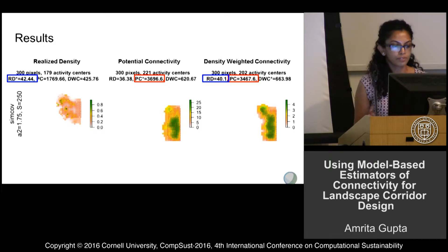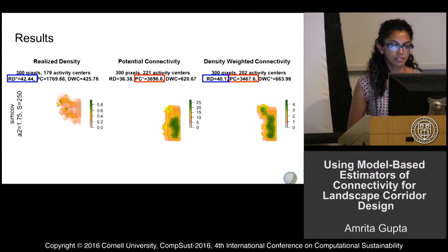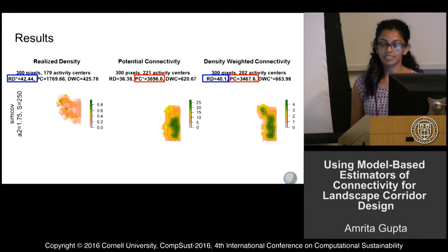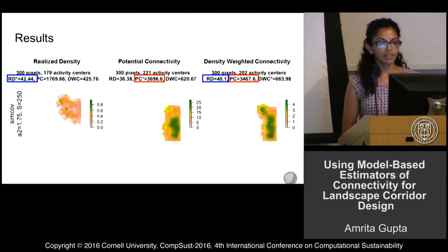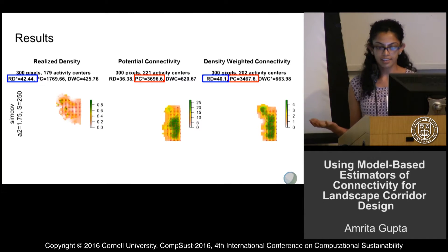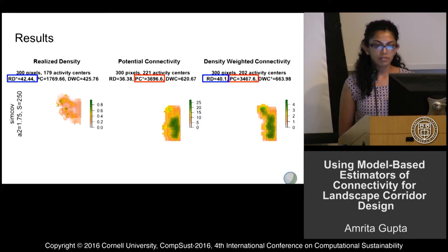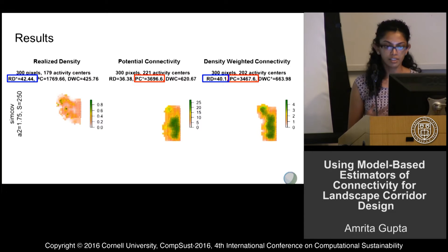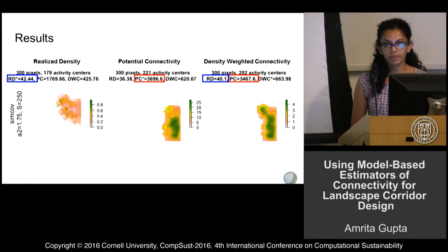I'd like to highlight one interesting result. The first result, on the left-hand side, is the optimization of just realized density — the number of individuals we're protecting — and we get about 42 individuals. We're working with a dataset based on black bears. In the potential connectivity case, we see a rather different looking landscape. In the density-weighted connectivity case, we get a similar number of individuals compared to realized density and also a similar degree of connectivity. This highlights that density-weighted connectivity doesn't compromise too much on either of the first two objectives, giving us a much cleaner way to optimize the reserve design problem.